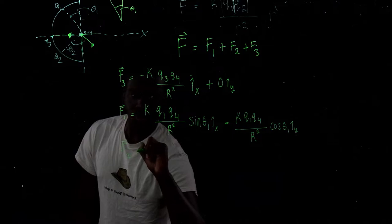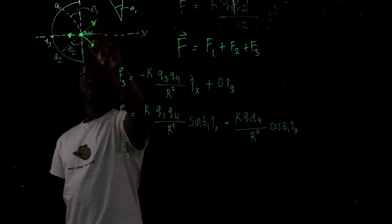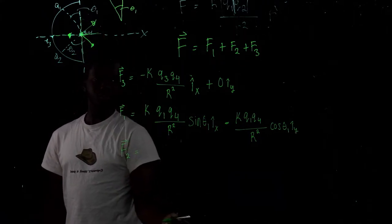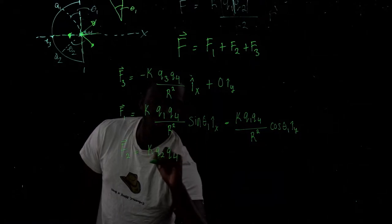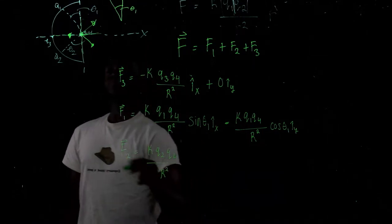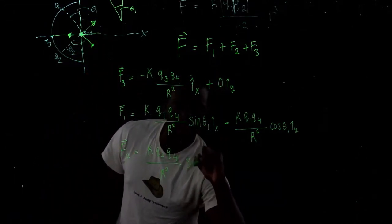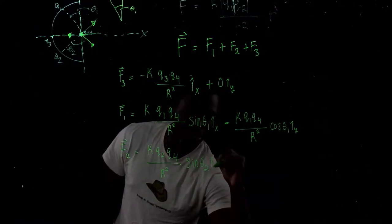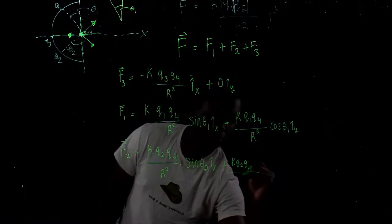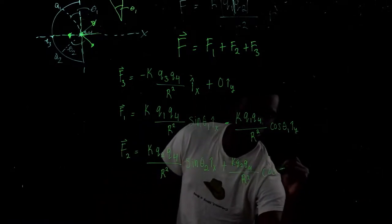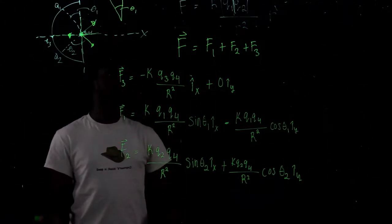For F2: it also repels, but this time in positive x and positive y. F2 equals k q2 q4 over r squared times sine(theta 2) in i-hat x, plus k q2 q4 over r squared times cosine(theta 2) in i-hat y.